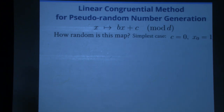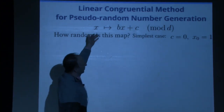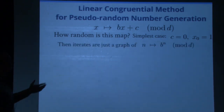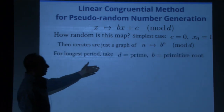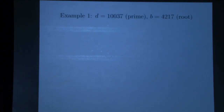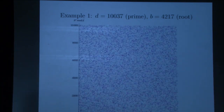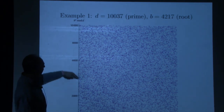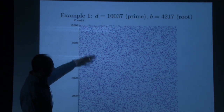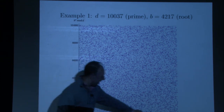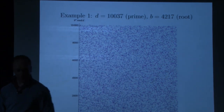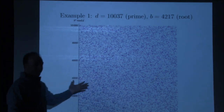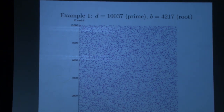How random is it? For simplicity, forget the shift and set initial seed 1. We're looking at n maps to b^n mod d. To make the period as long as possible, take d to be a prime and b a generator. Example: d = 10,037, b = 4,217 as a primitive root. The graph of b^n looks completely random; it verifies b is a root, and by Fermat's little theorem, after 10,037 exponentiations we're back to 1.